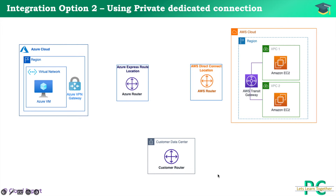In this diagram, on the left-hand side I have Azure Cloud, on the right-hand side I have AWS Cloud, and on the south side of the diagram we have the customer datacenter. AWS provides Direct Connect — an optical fiber or physical connection between your datacenter and the AWS datacenter. Similarly, Azure provides Express Route, which is the same concept: a dedicated optical fiber connection between Azure Cloud and your datacenter.